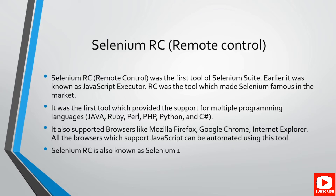Selenium RC (Remote Control) was the first tool from the Selenium suite. Earlier it was known as JavaScript Test Runner, and RC created a big boom for Selenium in the market because it supports multiple programming languages like Java, Ruby, Pearl, Python, and C#. RC supports writing commands directly in these languages, and it also supports multiple browsers like Mozilla Firefox, Google Chrome, and Internet Explorer. All applications developed in JavaScript can be automated using this tool.